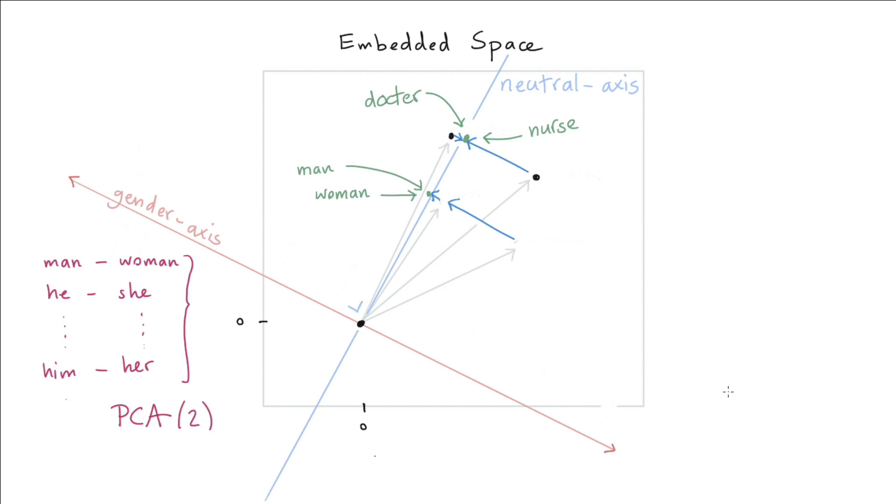Another thing that we could do is we could say, I'm mostly concerned about the professions. So I'm going to take words like steward and stewardess, and I'll make a list of these profession terms. And I'll make sure that those define the gender axis.